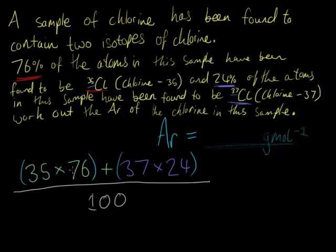Because if you imagine you add up these two percentages, 76 plus 24, we're going to get 100. So we divide this whole thing by 100. And what we get is, let me work this out now in my calculator. 35 times 76 plus 37 times 24.